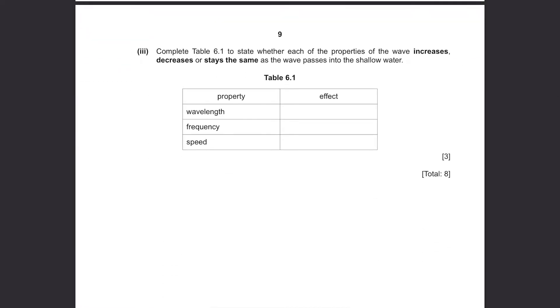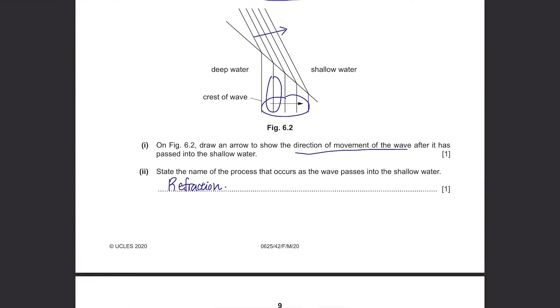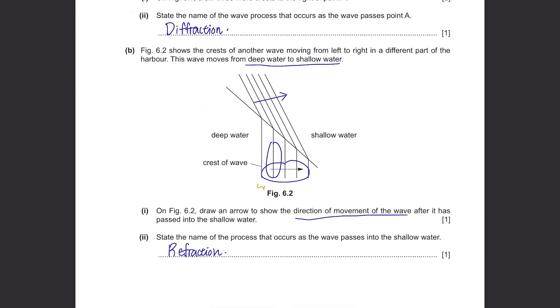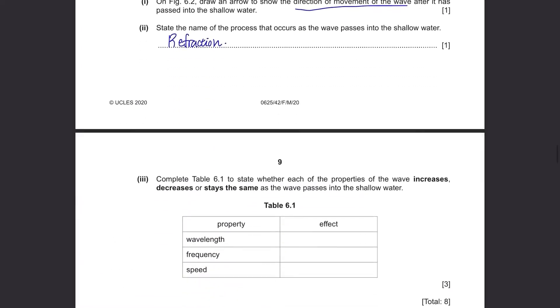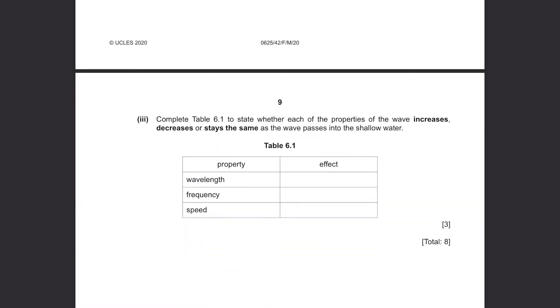Complete Table 6.1 to state whether each of the properties of the wave increases, decreases, or stays the same as the wave passes into the shallow water. We can always refer to this diagram. So the wavelength, you can see that it became much smaller, so it decreases. Then the frequency remains the same. It's not affected by refraction. For speed, it decreases. Think about the formula speed equals frequency times the wavelength. The frequency remains the same and the wavelength decreases, so obviously speed decreases as well.